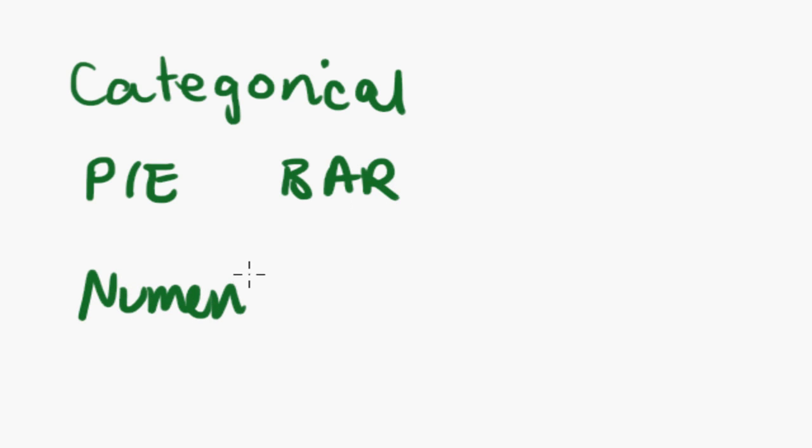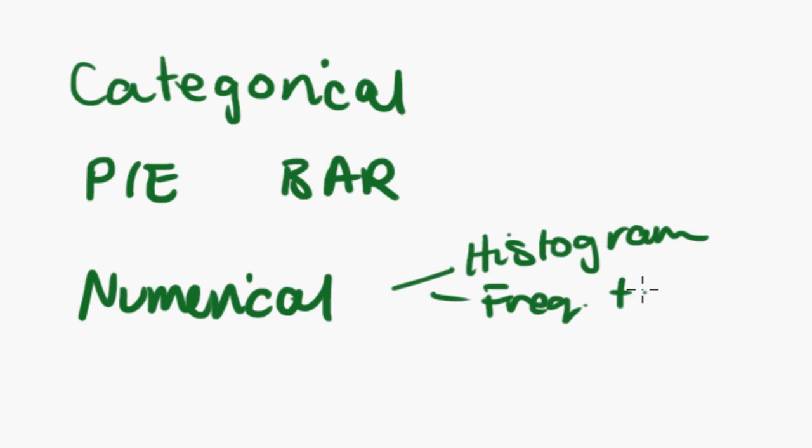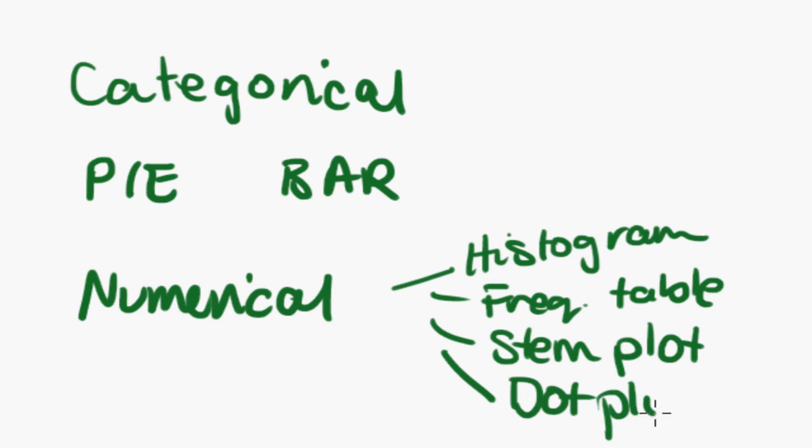And numerical data you would also represent in different ways. And that one, you might put in a frequency histogram or a frequency table. Or you might put it in a stem and leaf plot, or you could put it in a dot plot. And all of these things we're going to go through in some later tutorials. But the basic thing you need to know is what kind of data it is will dictate the way you represent the data visually.